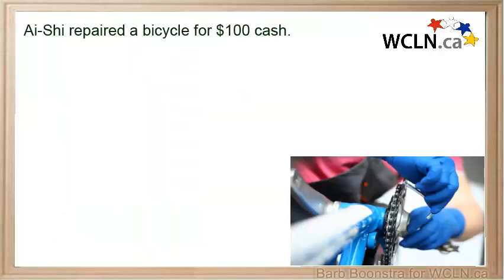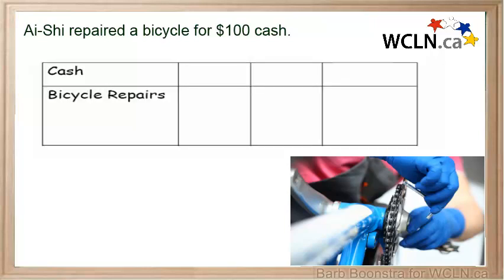Ashi repaired a bicycle for $100 cash. What two accounts are affected? Obviously cash and bicycle repairs. Cash is an asset account and bicycle repairs is a revenue account. Cash is increasing and revenue is increasing.